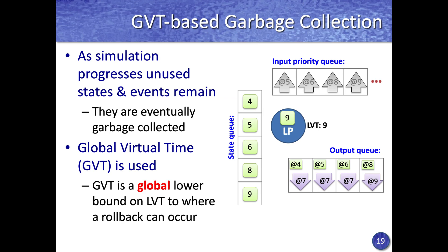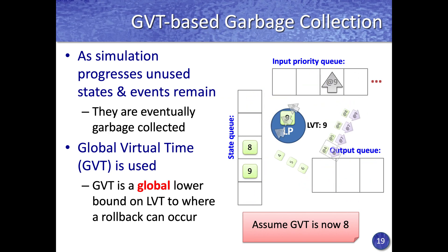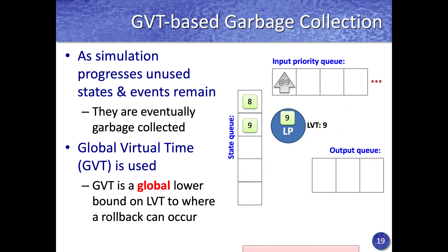GVT provides a global lower bound up to which no rollback can occur — global in the sense that it spans all logical processes in the parallel simulation. For example, if GVT is now 8, all states and events up to time 8 are no longer useful and can be garbage collected. This garbage collection process happens periodically to ensure the simulation does not run out of memory.